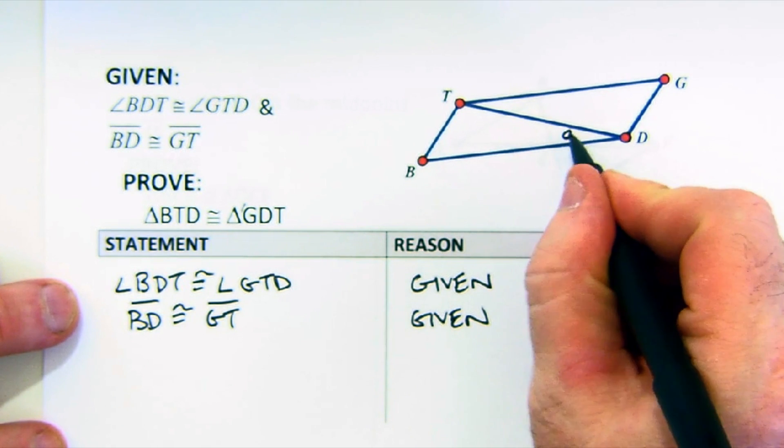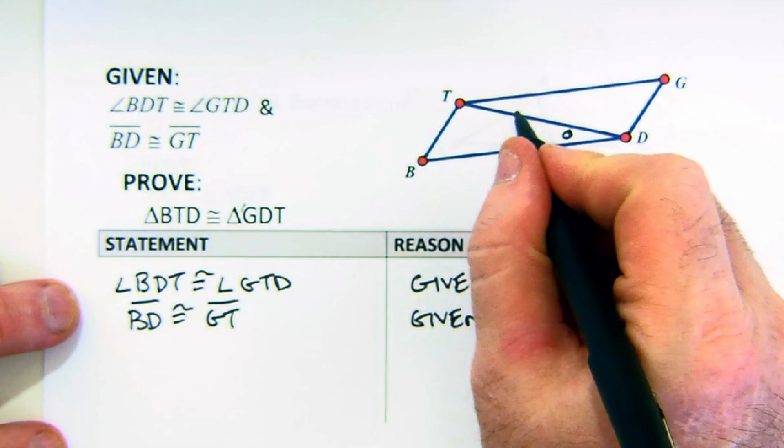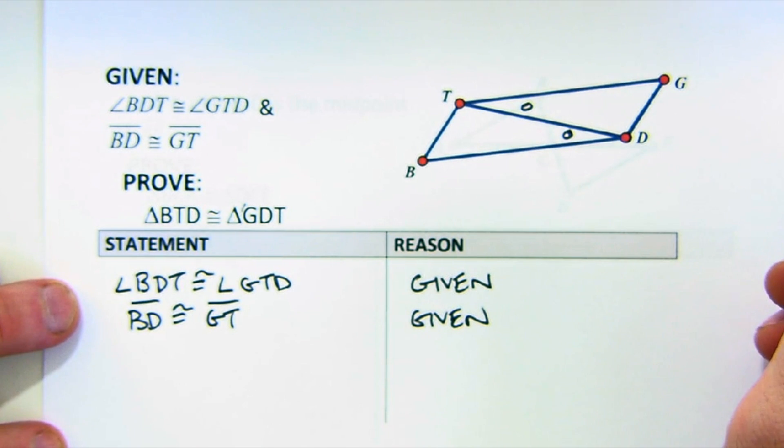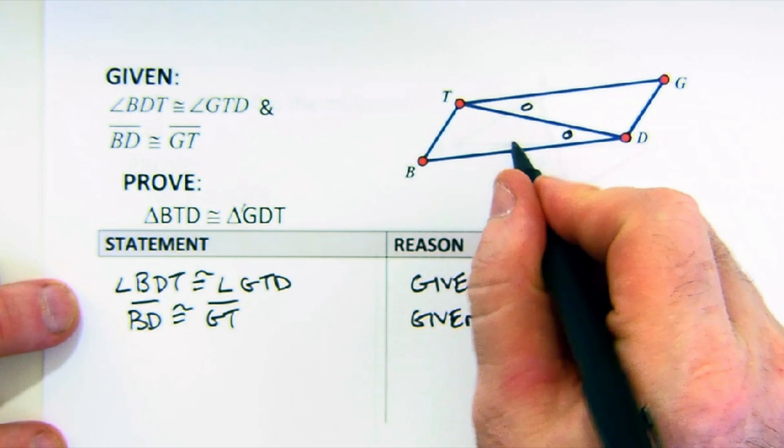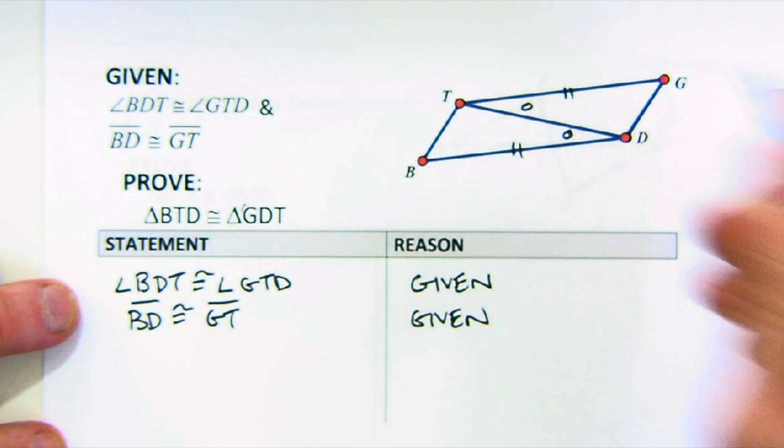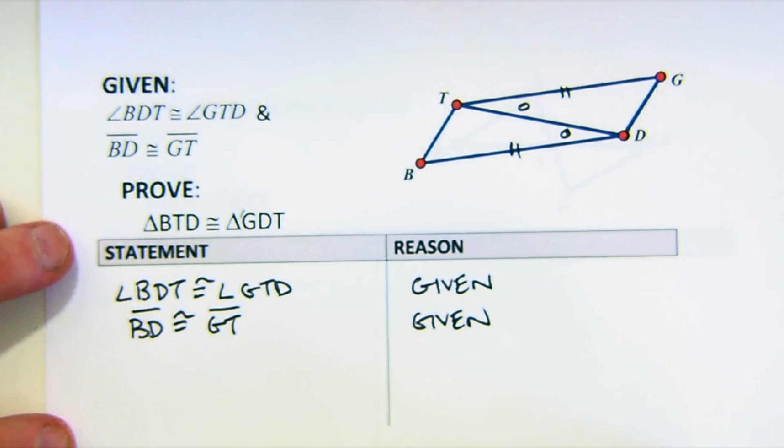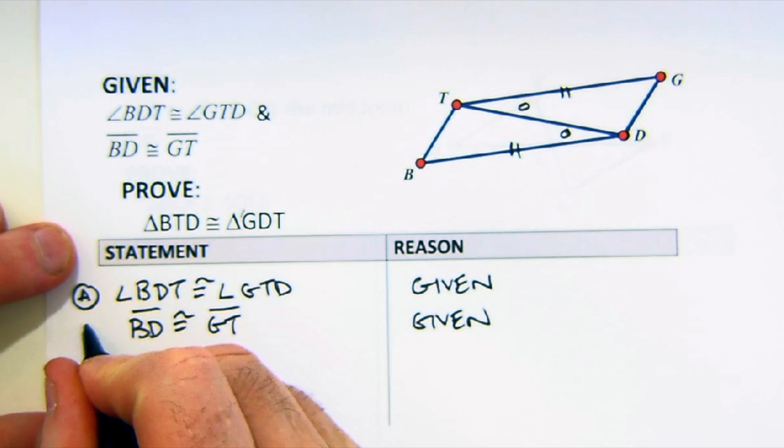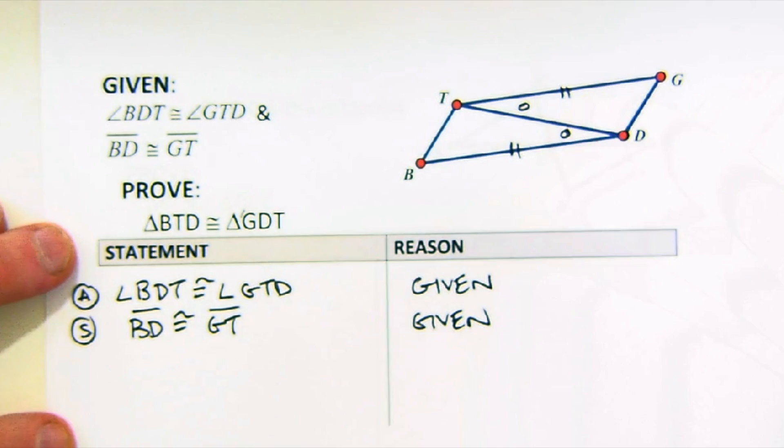We basically state what has been given to us. Always use the diagram to help you out. So BDT, this angle, is the same as GTD, this angle. The other given is BD, this length, is the same as this length. Usually, most of these proofs provide you with two of the three required items. One of the things I like to do is keep track of what I've already listed. I've listed one angle in one side.